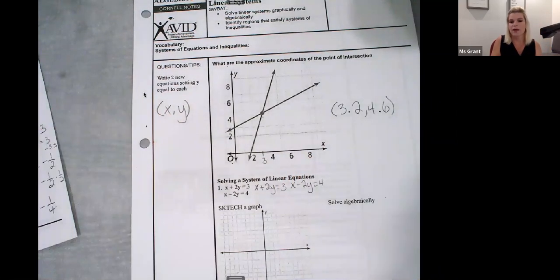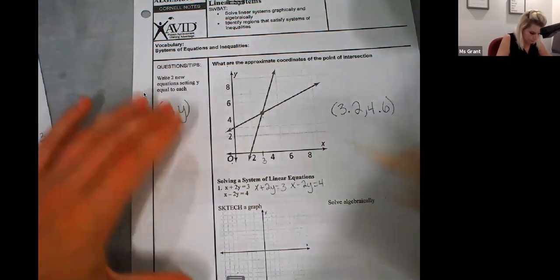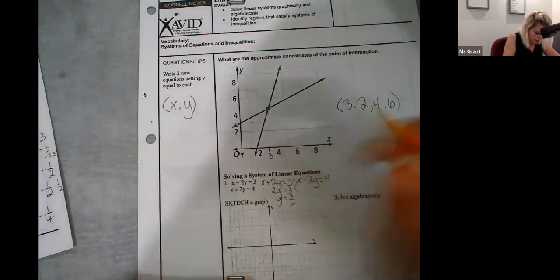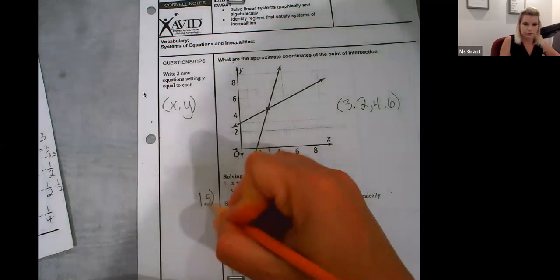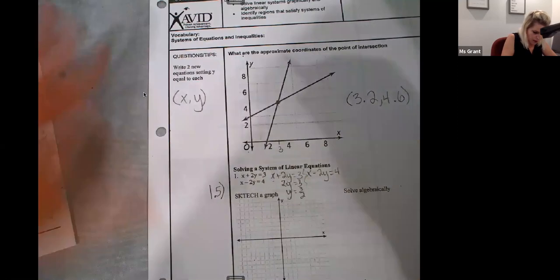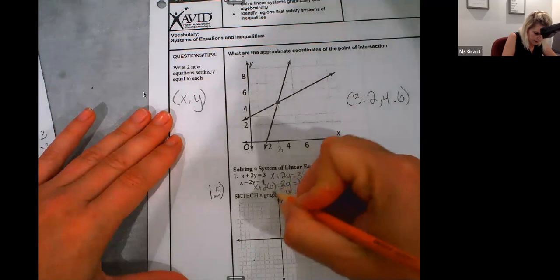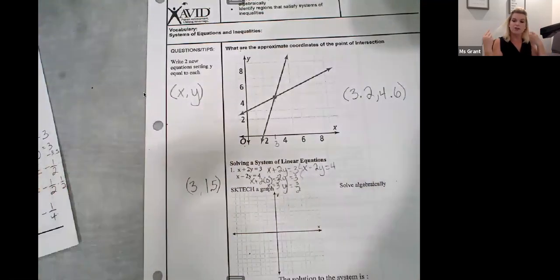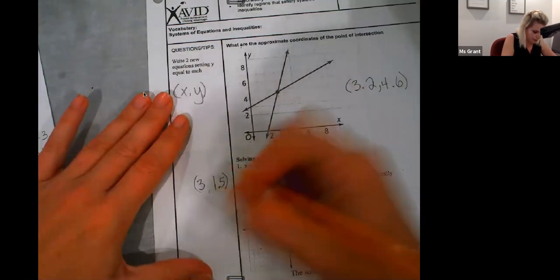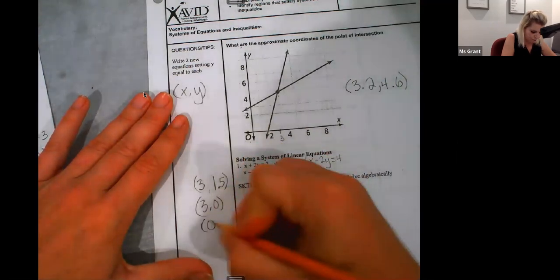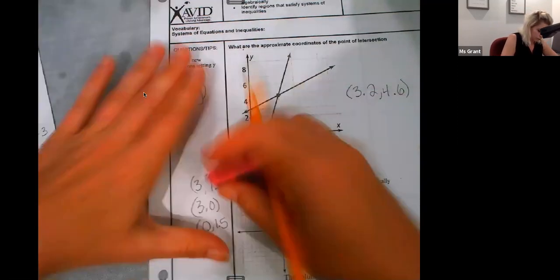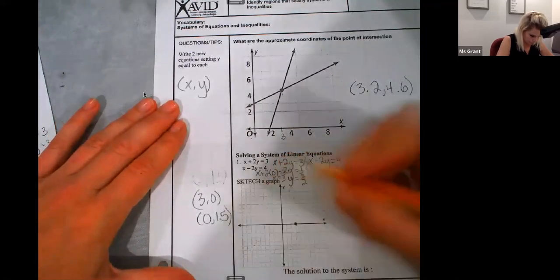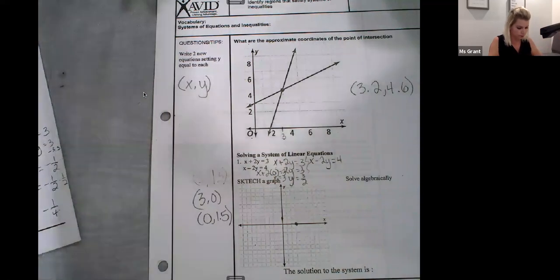If I were to find the X and the Y intercepts, then I would be plugging in 0 for both, right? So, if I plug in 0 for X, I get 2Y equals 3. Y equals 3 halves. So, I've got Y equals 1.5. If I plug in 0 for Y, I get X plus 2 times 0 equals 3. X equals 3. So, that's my X intercept and my Y intercept for the first equation. So I'm going to actually graph that. Here's my first line.